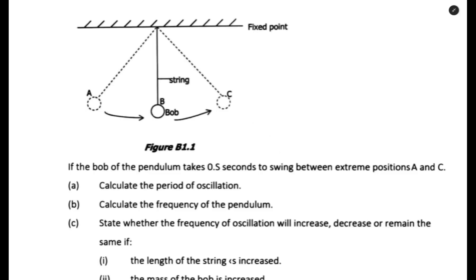Let us have a look at the first part of the question. The diagram shows a simple pendulum. If the bob of the pendulum takes 0.5 seconds to swing between the extreme positions A and C, the first question we are answering is: calculate the period of oscillation.